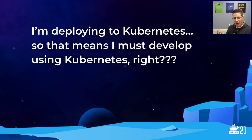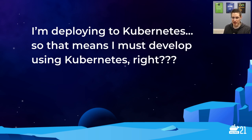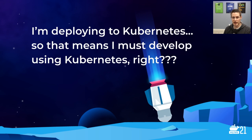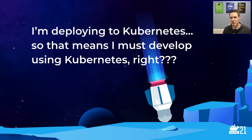But I often hear things like: 'I'm going to deploy to Kubernetes or to ECS or fill in the blank, so that must mean I need to develop using Kubernetes or ECS or Swarm.' Well, when I hear that, I immediately think of a rocket crashing and burning, because Kubernetes and ECS — these deployment frameworks — aren't really designed for local development.